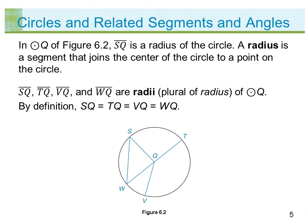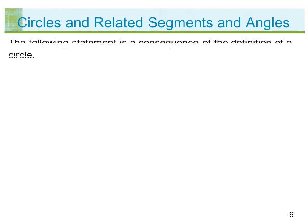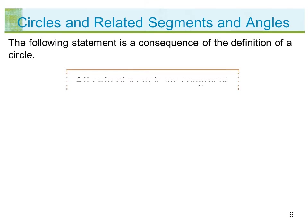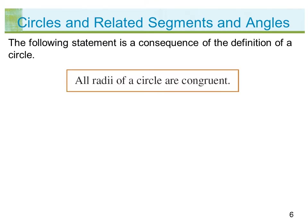By definition, the length of SQ equals the length of TQ equals the length of VQ equals the length of WQ. The following statement is a consequence of the definition of a circle: all radii of a circle are congruent.